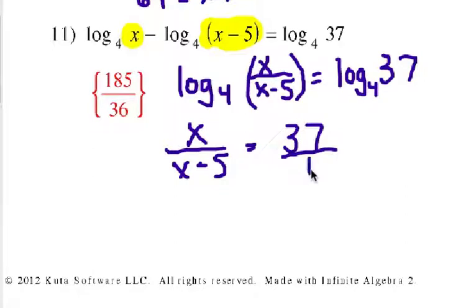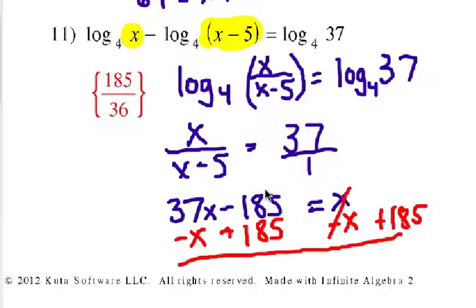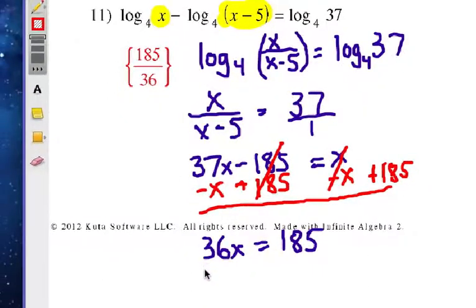And to solve it from here, we can think of it as a proportion, or we can multiply both sides by x minus five. But either way, we're going to do 37 times x minus five, which is going to be 37x minus 185 equals x. Which means we now are going to subtract x on each side, and we are going to add 185 on each side. Our final step is going to be divide each side by 36.